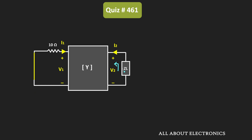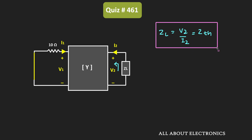In a two-port network, when the load is connected, the value of the load equals V2 divided by I2. So in the condition where the voltage source is short-circuited, the load impedance equals ZTH. That means if we find V2 divided by I2 in this condition, that is equivalent to ZTH.